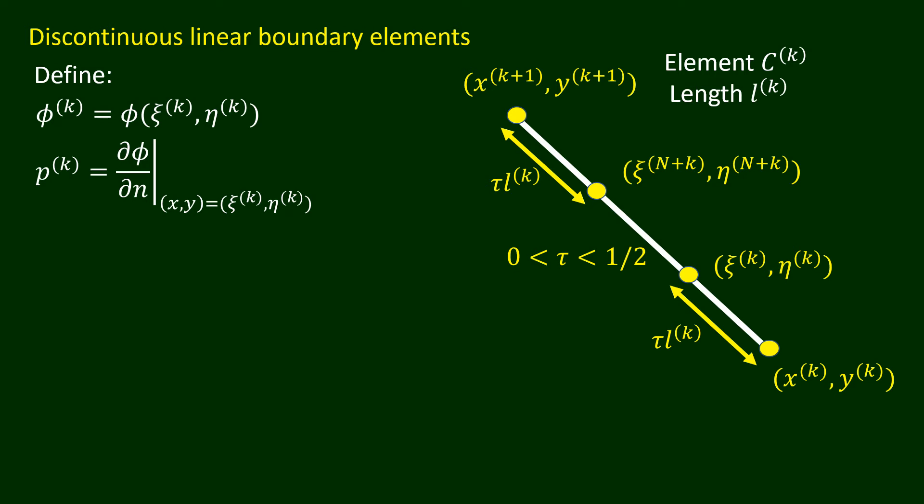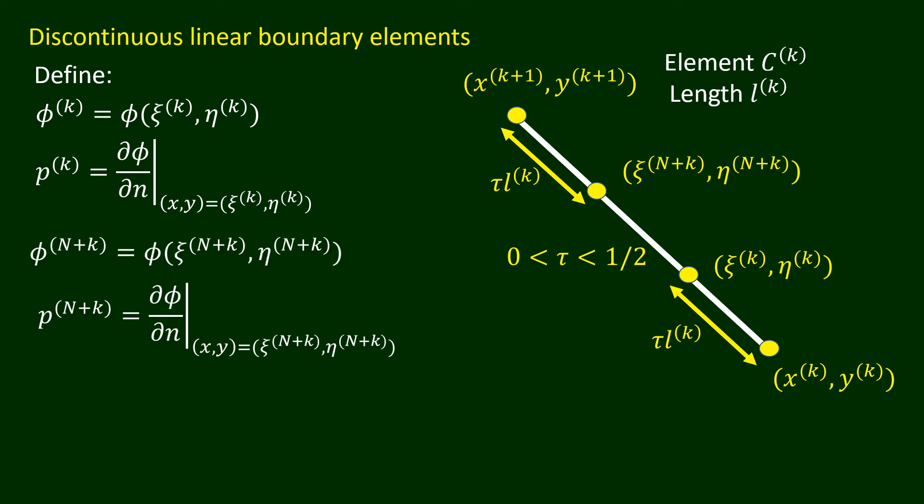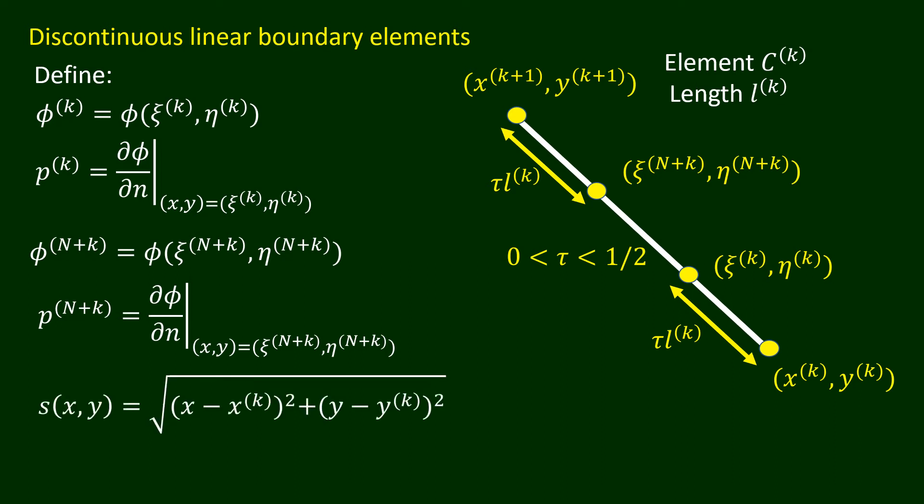Also, phi_{n+k} and p_{n+k} are the values of phi and del phi over del n, respectively, at the point (xi_{n+k}, eta_{n+k}). The function s(x,y) gives the distance between the endpoint (xk, yk) and the general point (x,y) on the element ck.